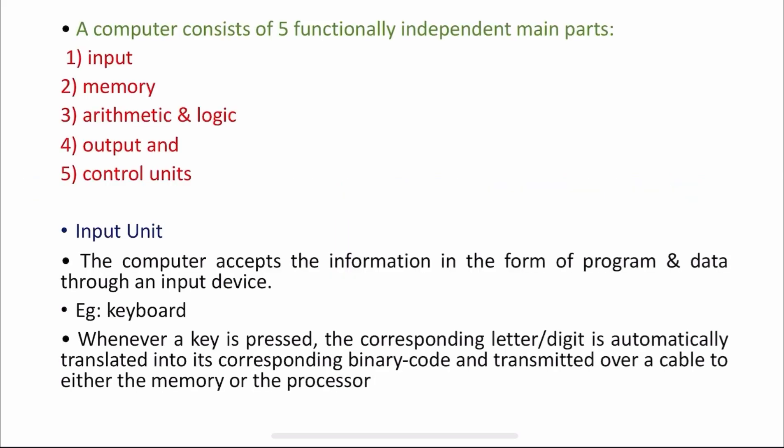A computer consists of totally five functionally independent main units. The first unit is input unit, second unit is memory unit, and the third unit is arithmetic and logic unit which can also be called as ALU. The fourth one is output and the fifth one is control unit. Now I'm going to discuss each unit in detail.